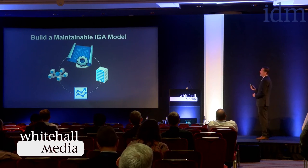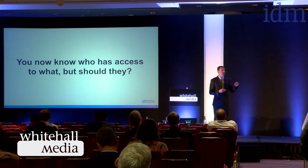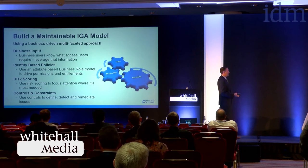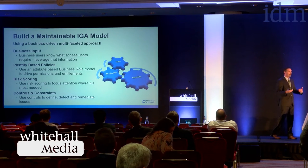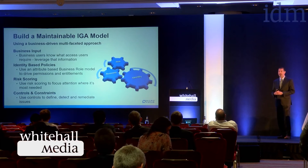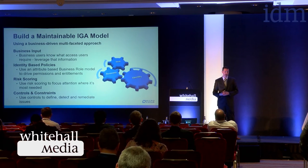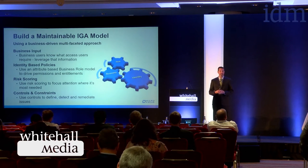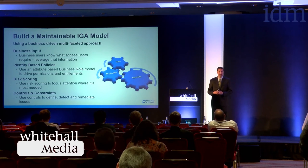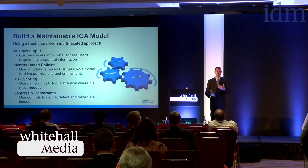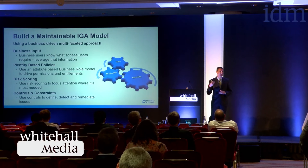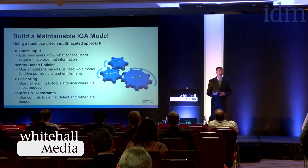Step two is building a maintainable IGA model. We know who has access to what — but should they? This involves input from the business because they understand what projects are in place. We turn that into policy based on what's important to the business plus regulations and security policies. Risk scoring is useful here — knowing what's highest risk lets us focus on those areas and de-emphasize others. We need controls and constraints to detect abnormal things and remediate them — detective and corrective controls alongside preventive.